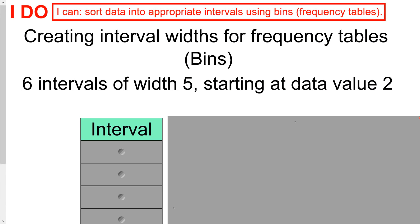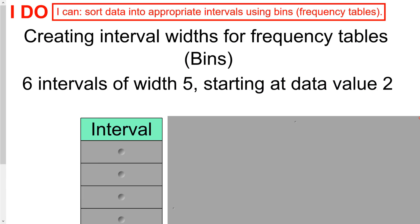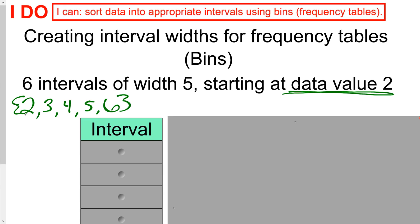Let's focus just on the interval column, since a lot of students get confused here. I want to create an interval column with 6 intervals and a width of 5, starting at data value 2. I'll start at 2, and with a width of 5, that means 2, 3, 4, 5, and 6 are all included — which I can write as 2–6. Counting those: 1, 2, 3, 4, 5 — yes, that's a width of 5. So my first interval is 2 through 6.